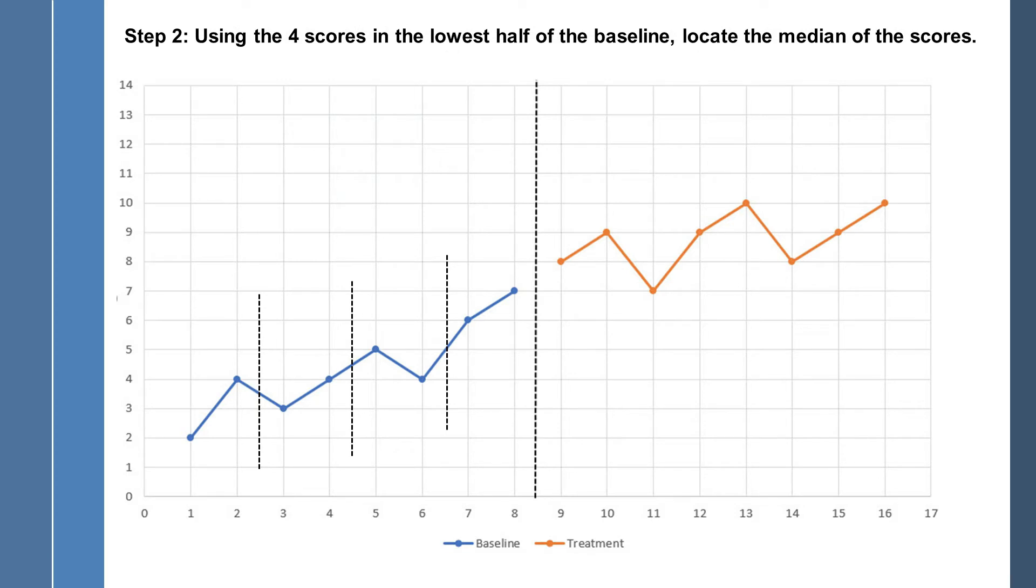So now, step two, using the four scores in the lowest half, I guess I should say the lowest quarter of the baseline. Actually, no, it'd be the lowest half. The four scores in the lowest half, locate the median of those scores. So we're just going to concentrate on these. And we're going to look at the median on the y-axis.